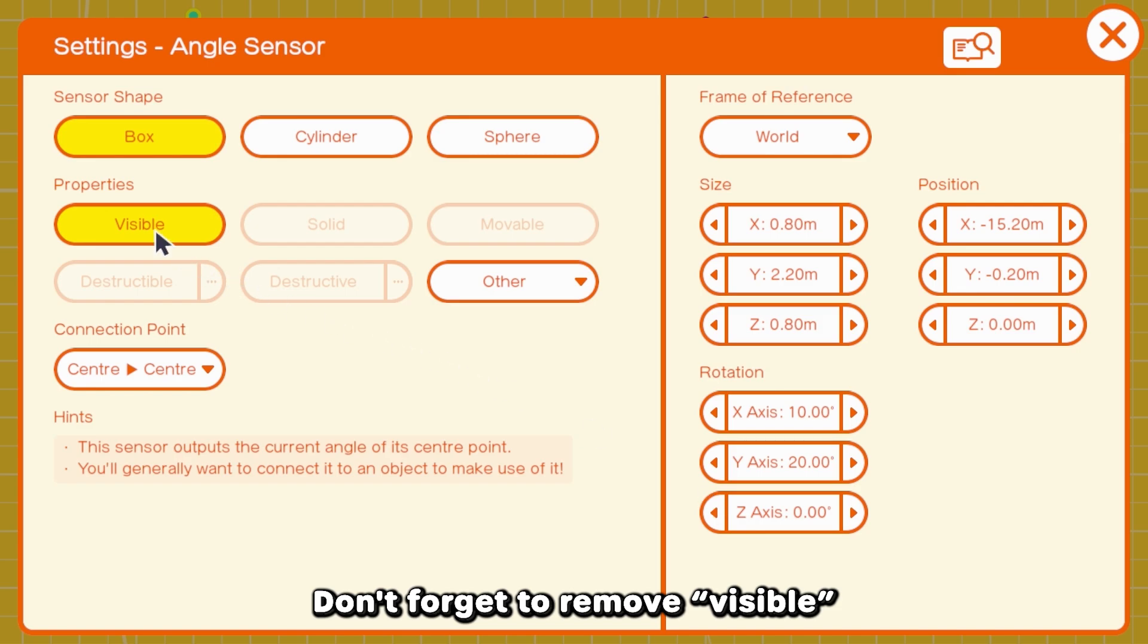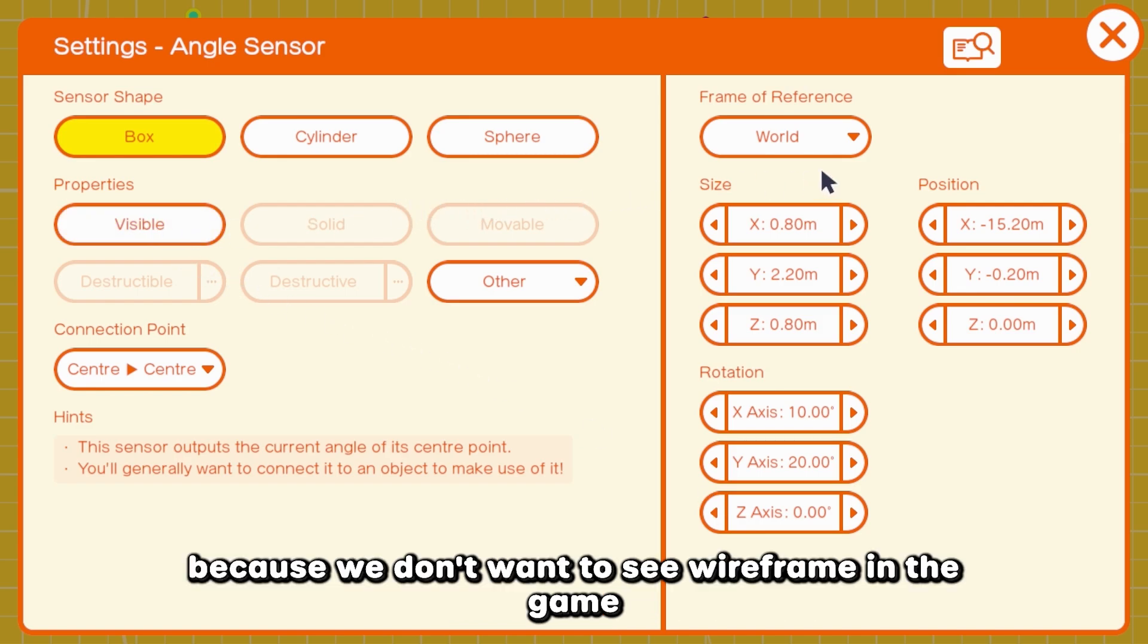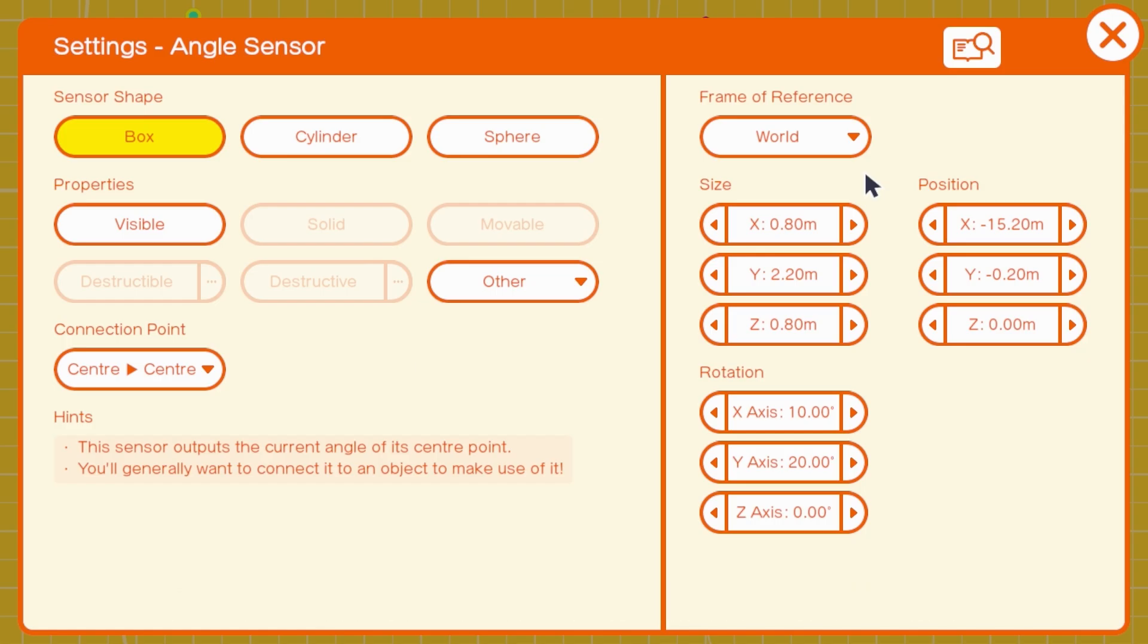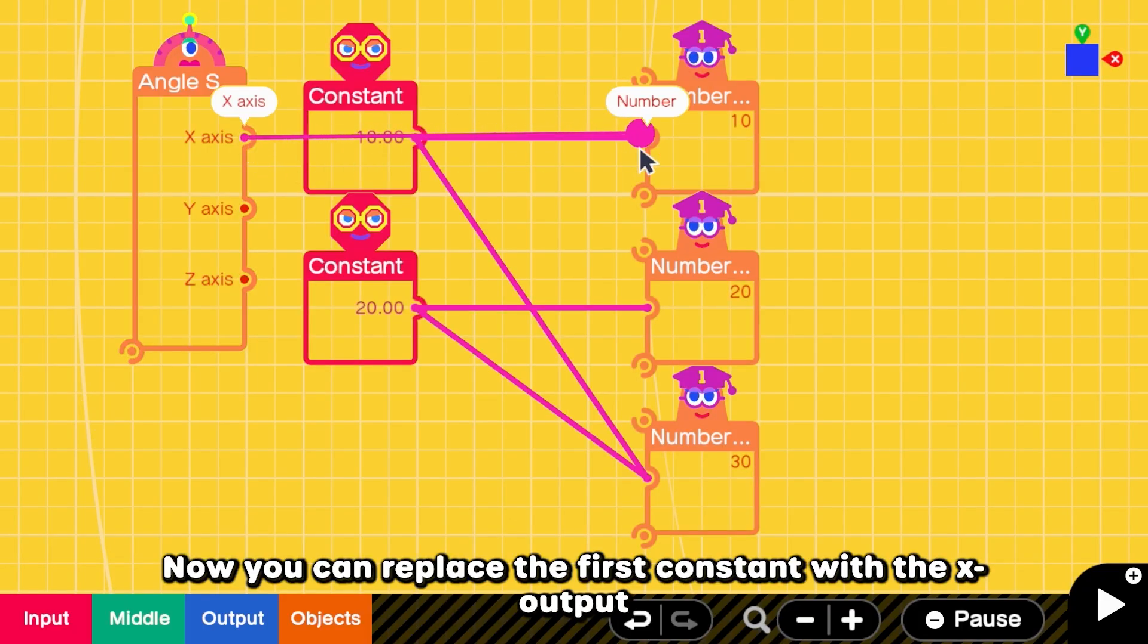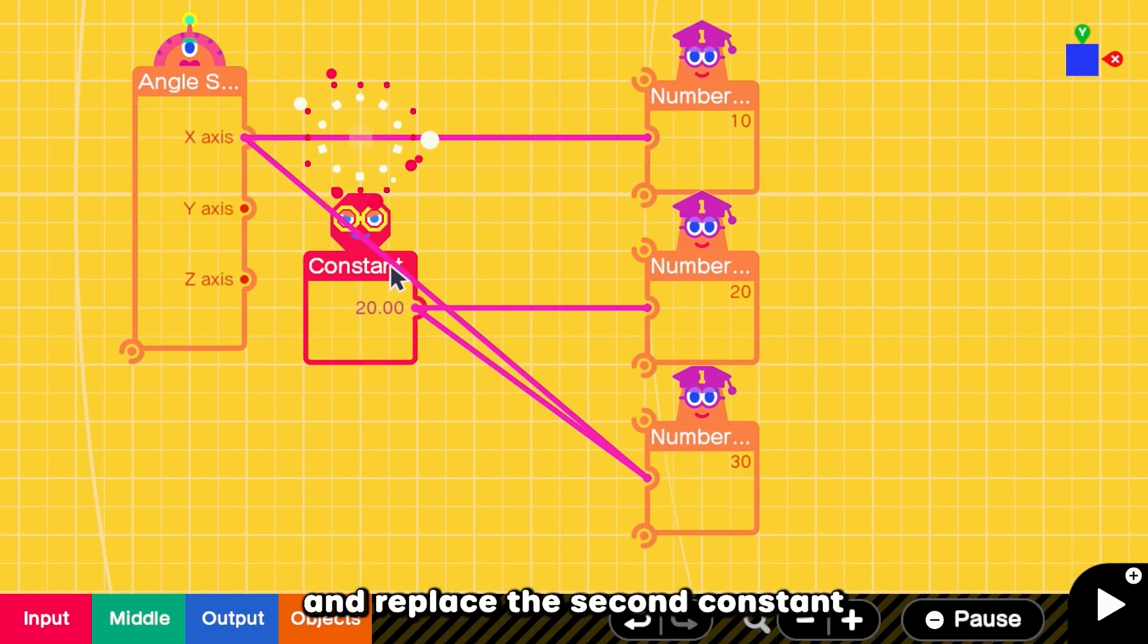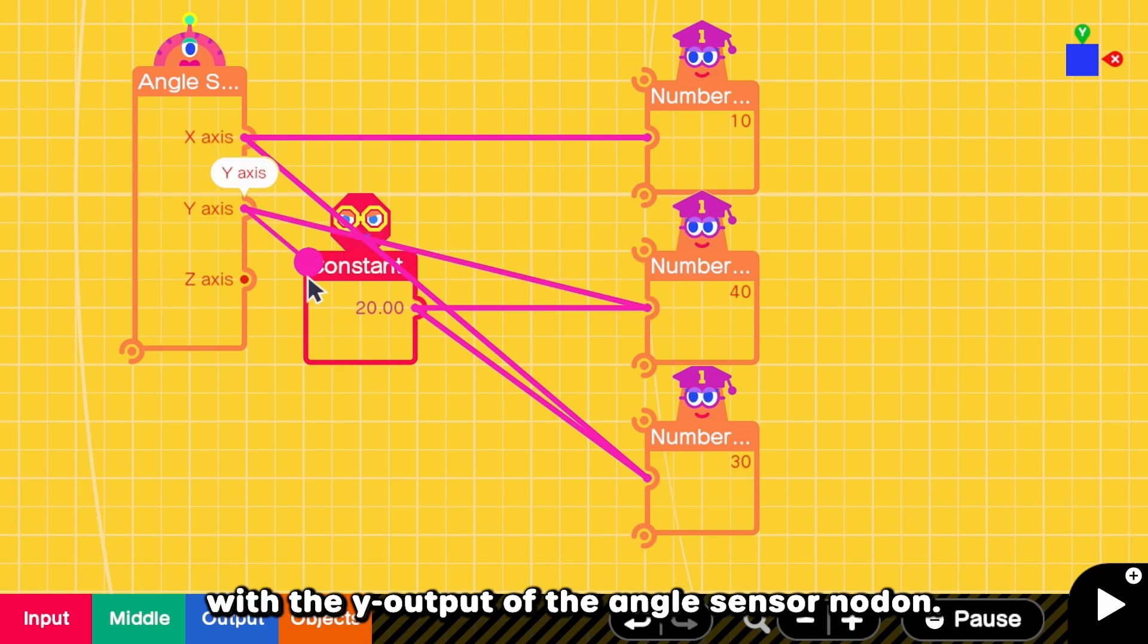Don't forget to remove visible because we don't want to see wireframe in the game, and make sure that the frame of reference is world. Now you can replace the first constant with the X output, and replace the second constant with the Y output of the angle sensor nodon.